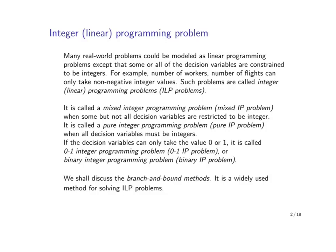For example, if you need to decide how many workers to employ to maximize profits, or if a decision variable represents the number of flights, we need to impose the restriction that these variables take only non-negative integer values. Linear programming problems in which some or all of the decision variables are constrained to be integers are called integer linear programming problems, abbreviated as ILP problems. In most cases, people and reference books simply refer to them as integer programming problems, omitting the word linear.